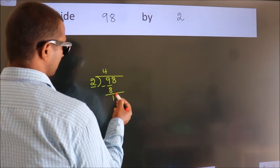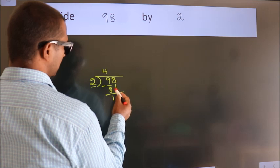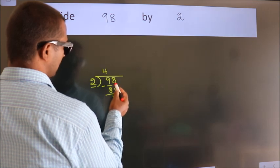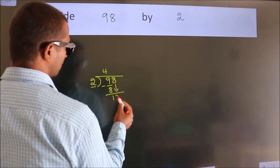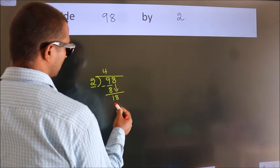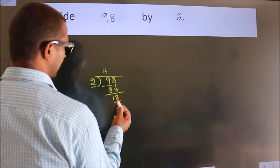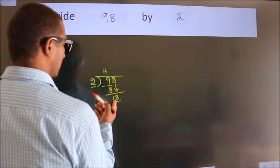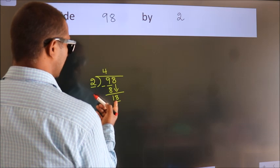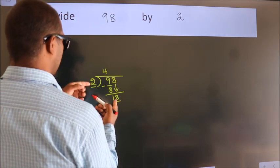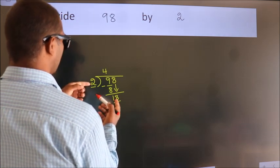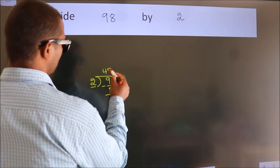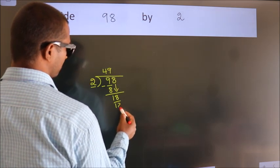After this, bring down the beside number. So 8 down, so 18. When do we get 18 in the 2 times table? 2 nines, 18.